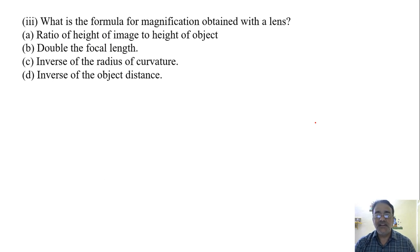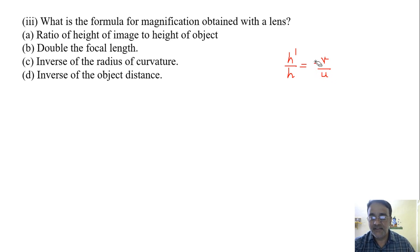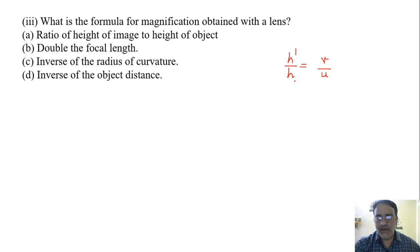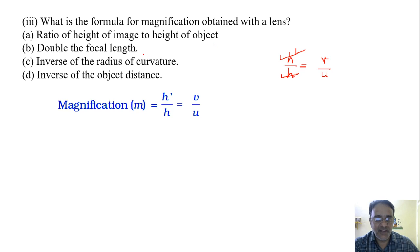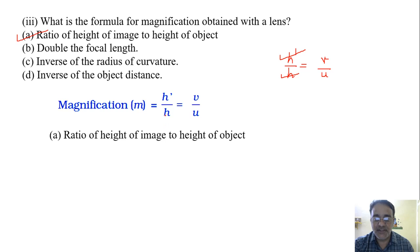The third question: what is the formula for magnification obtained with a lens? The magnification formula is m = h'/h, where h' is the height of the image and h is the height of the object. For a mirror it equals -v/u, and for a lens it equals v/u. The correct option is the ratio of height of image to height of object.